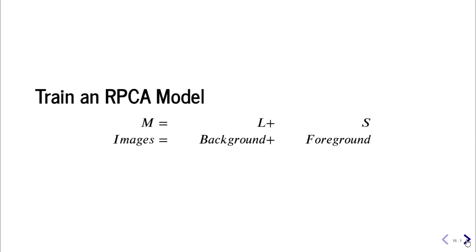Briefly, the RPCA model decomposes an input table into a low-rank table and a sparse table through an optimization process. In our case, the input table is the images, the low-rank table represents the background, and the sparse table represents the foreground of flying bees.